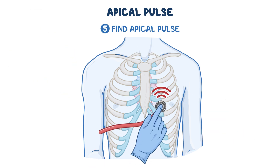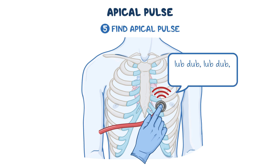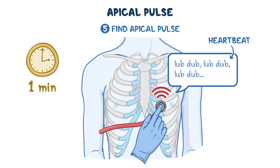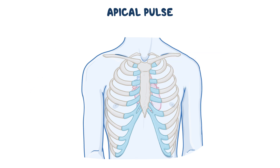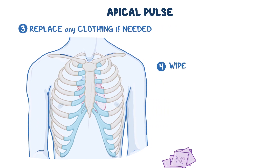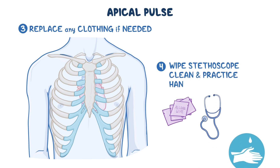After identifying the correct location, place your stethoscope against the patient's apical pulse. You should hear a 'lub dub, lub dub' sound repeating — each lub dub is one heartbeat. Count the heartbeats for one full minute. When done, remove the stethoscope, help the patient replace any clothing if needed, assist them into a comfortable position, wipe the stethoscope clean, and practice hand hygiene.